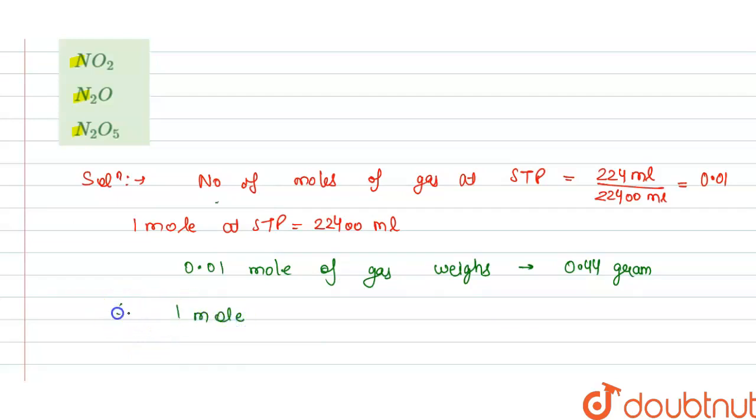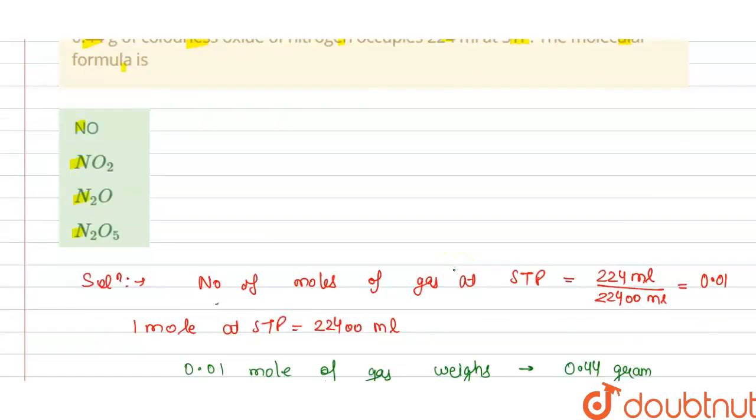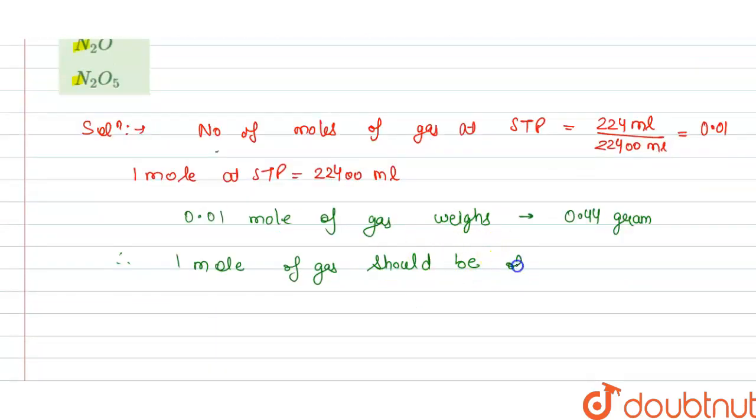Therefore, 1 mole of gas should be of weight equals to 0.44 divided by 0.01 multiplied by 1. So this will become 0.44 divided by 0.01, which is 44 gram.